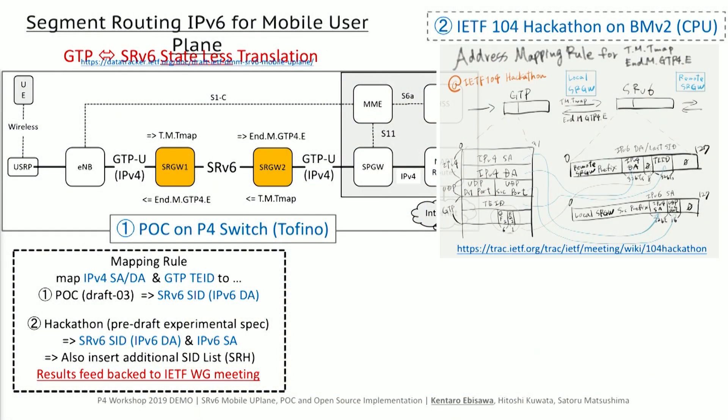To drive the standardization and deployment, we have conducted a POC together with SoftBank and Apprecious Systems. Since it's a new protocol before standardization, no one supported it, so we implemented it on a Tofino ASIC using P4. At the IETF last meeting at the Hackathon, from the lessons learned at the POC, we implemented a new version of SRV6's mobile user plane function to suggest updating the internet draft at the IETF working group.